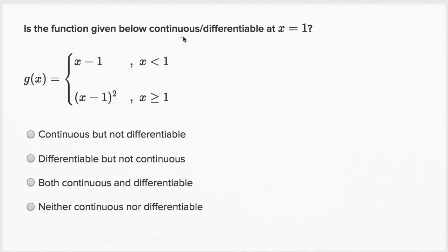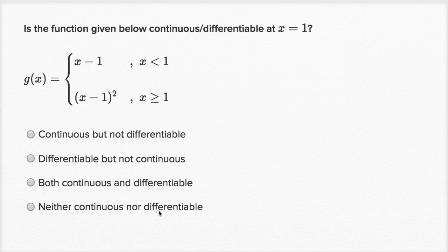Is the function given below continuous or differentiable at x equals one? They define the function g piecewise right over here. They give us a bunch of choices: continuous but not differentiable, differentiable but not continuous, both continuous and differentiable, or neither continuous nor differentiable. Pause this video and see if you could figure this out.